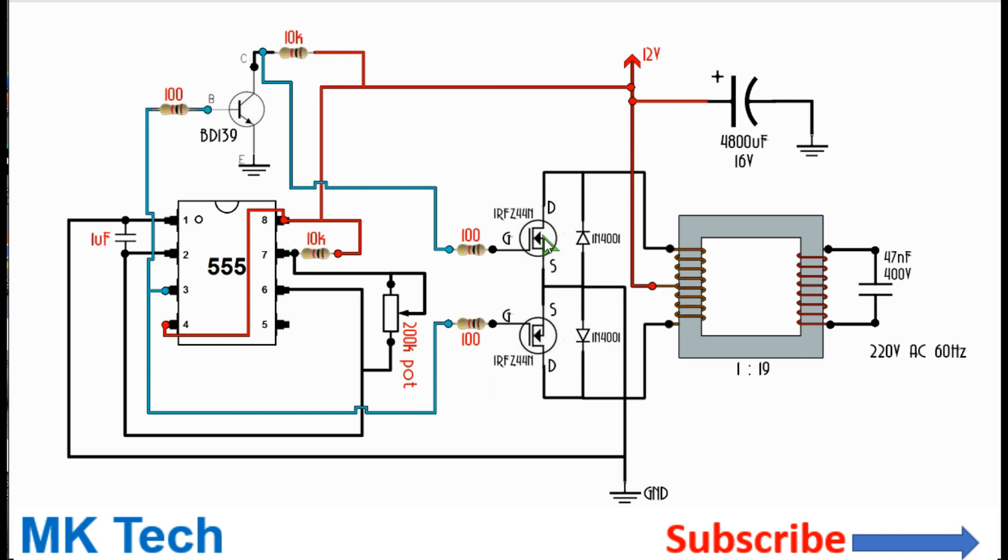The second MOSFET is prevented from turning on by this NOT gate made of this transistor and these two resistors. So when the output goes low the first MOSFET turns off and the second MOSFET turns on because of this NOT gate inverter. So the gate will be powered on and this will allow current flow through the other half winding.